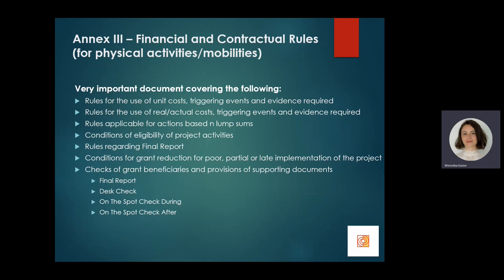Annex 3, financial and contractual rules, is a very important document which defines conditions for eligibility of costs and activities, rules regarding the use of unit costs and real costs for KA220 projects, and rules applicable for actions based on lump sums — applicable to small scale partnerships. Annex 3 outlines when costs are eligible, what evidence you need to keep for each awarded cost, guidance on evidence for each type of KA2 project, when your grant might be reduced, and different types of checks that can be performed by Largas.